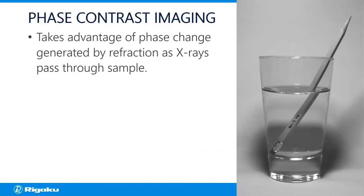Refraction simply means a change of angle when we illuminate a sample. We can easily illustrate that using the picture on the right. It shows that the appearance of a pencil is changed — it becomes broken or bent — and that's caused by the refraction of light as it passes through water. The same thing happens with x-rays.